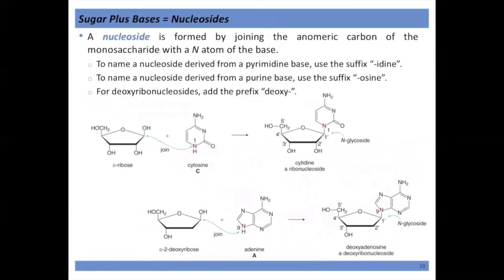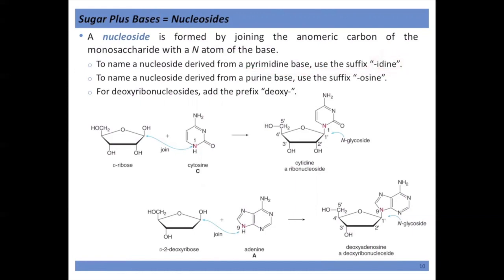When we put two of the parts together — the base combined with the sugar — we get what is referred to as a nucleoside. In naming them, if derived from a pyrimidine base we end in -idine, and if derived from a purine base we end in -osine. We identify a deoxysugar by appending that to the front.